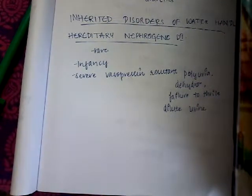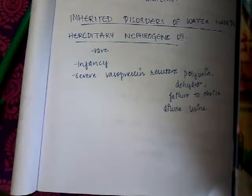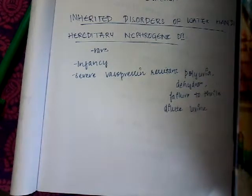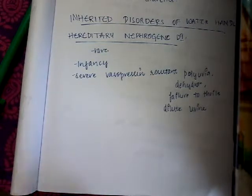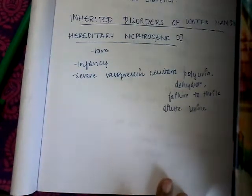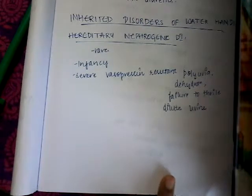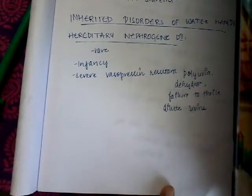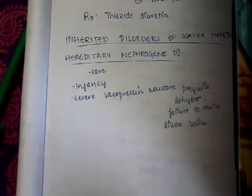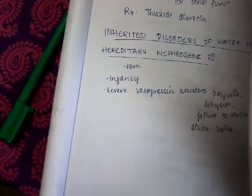Hello friends, let us continue our lecture today on inherited disorders of water handling. I'm going to discuss hereditary nephrogenic diabetes insipidus. In diabetes insipidus there is excess loss of fluid leading to polyuria. This hereditary nephrogenic diabetes insipidus is a rare condition which occurs in infancy.